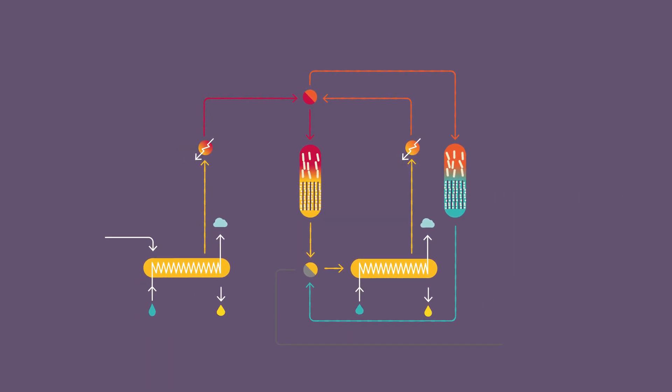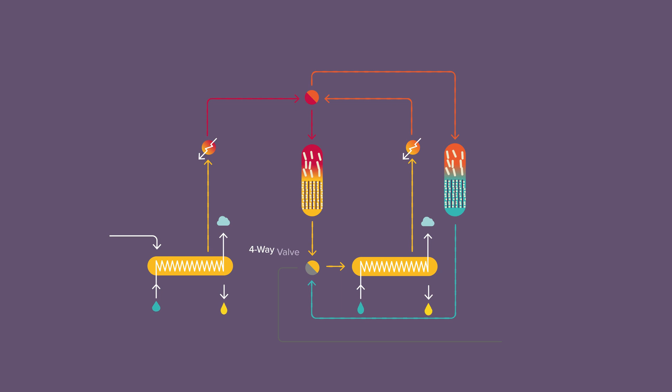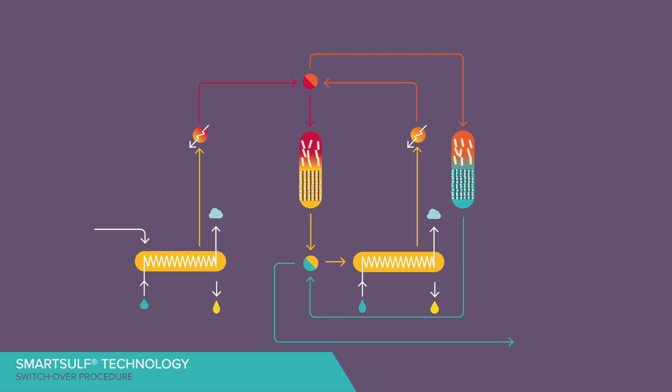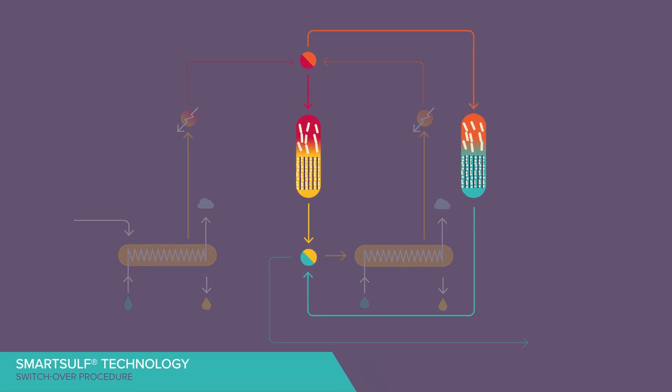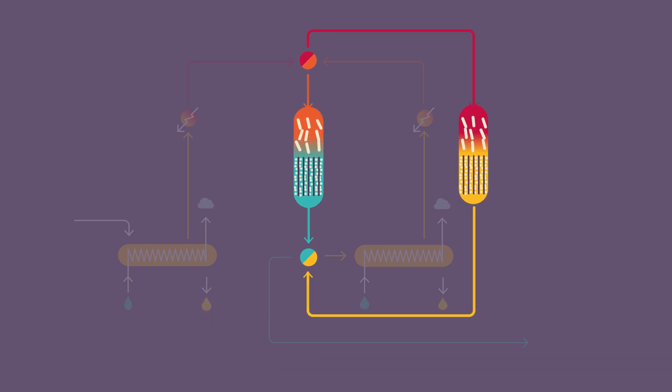Finally, the treated process gas flows via the four-way valve to the incinerator without requiring a tailgas treatment unit. Once the catalyst pores of the cold mode reactor are saturated with sulfur, a switchover procedure is required to perform the catalyst regeneration.